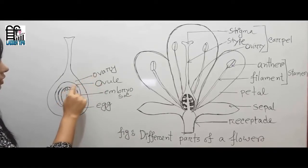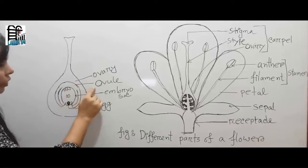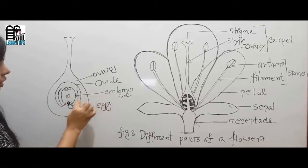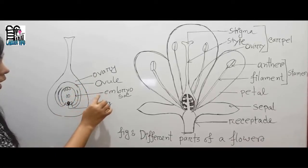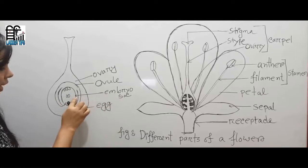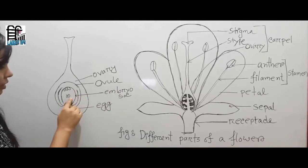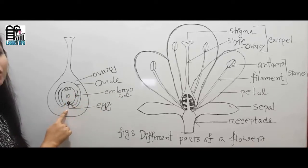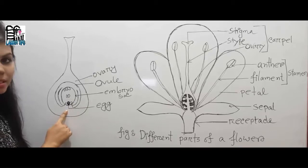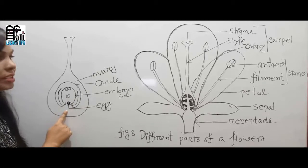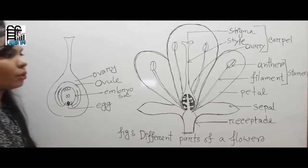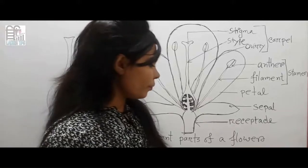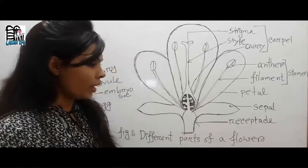Here you can see the ovary — I have shown it separately. This is an ovary, and inside the ovary there are ovules. Inside the ovule there is an embryonic sac, and inside the embryonic sac there is an egg that will be fertilized during fertilization.